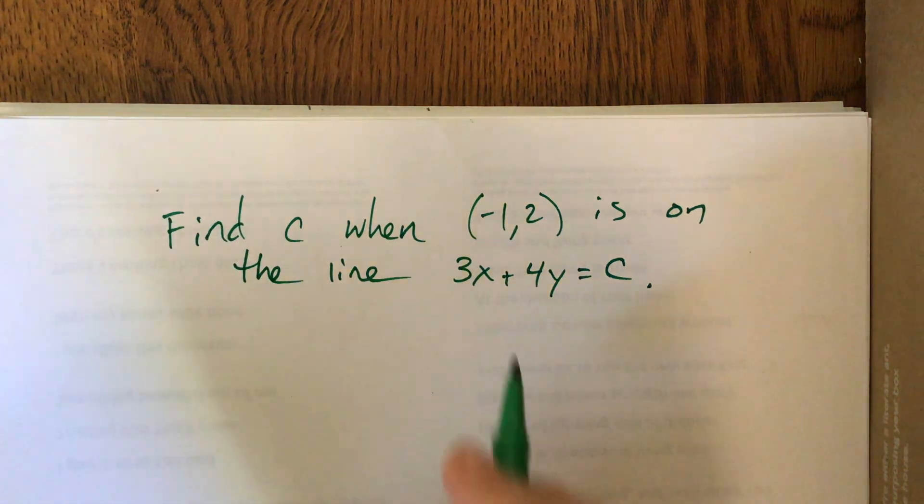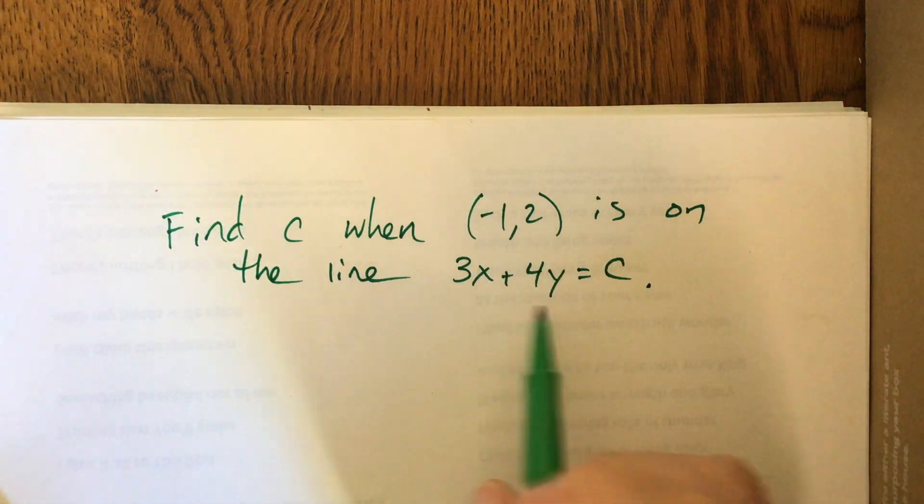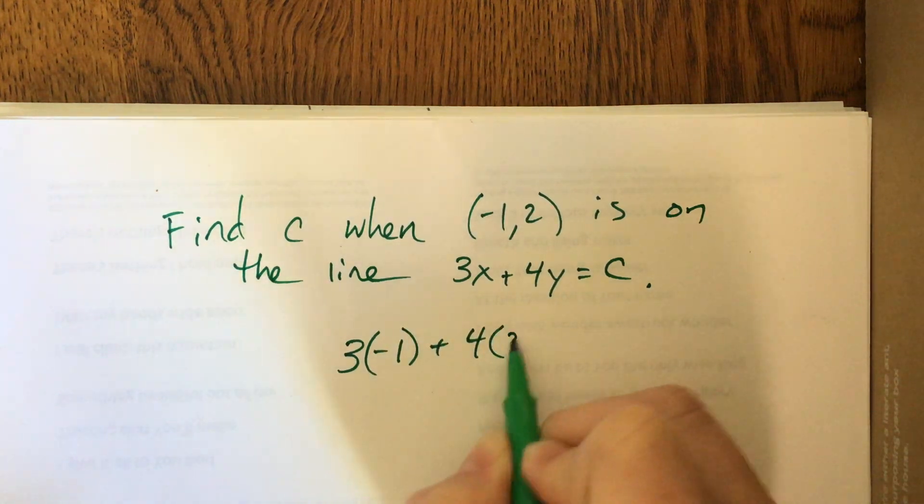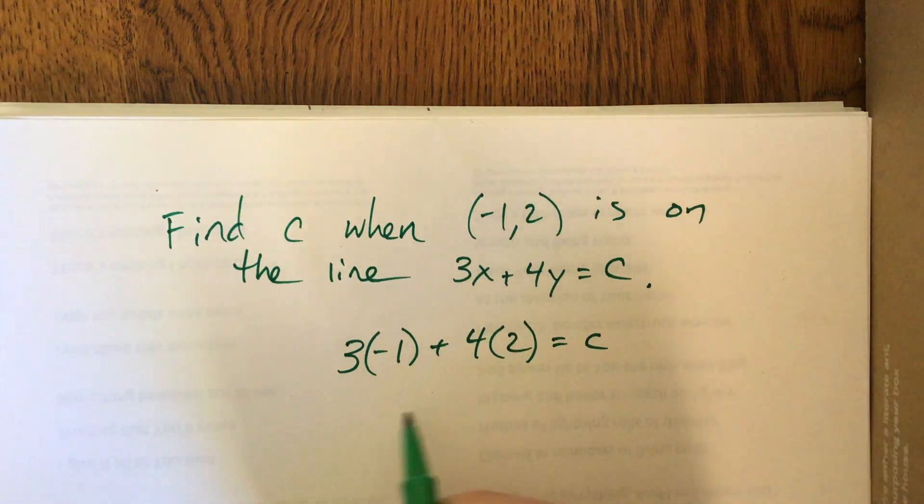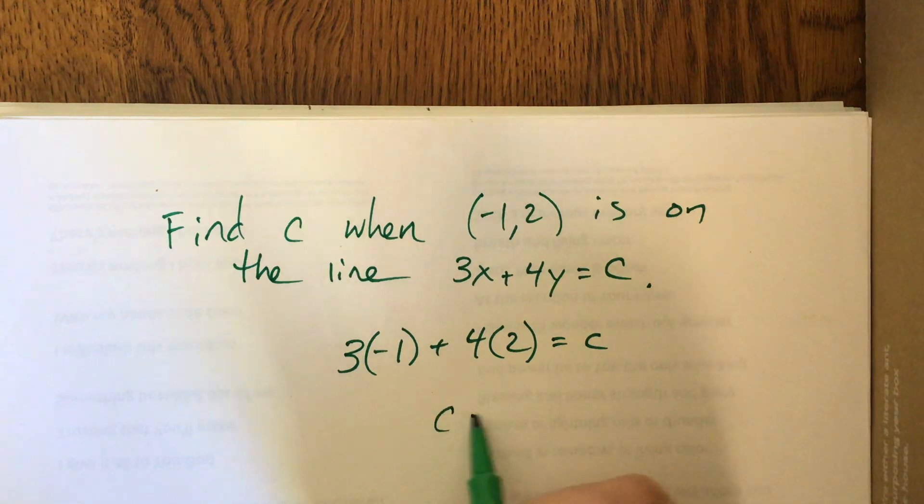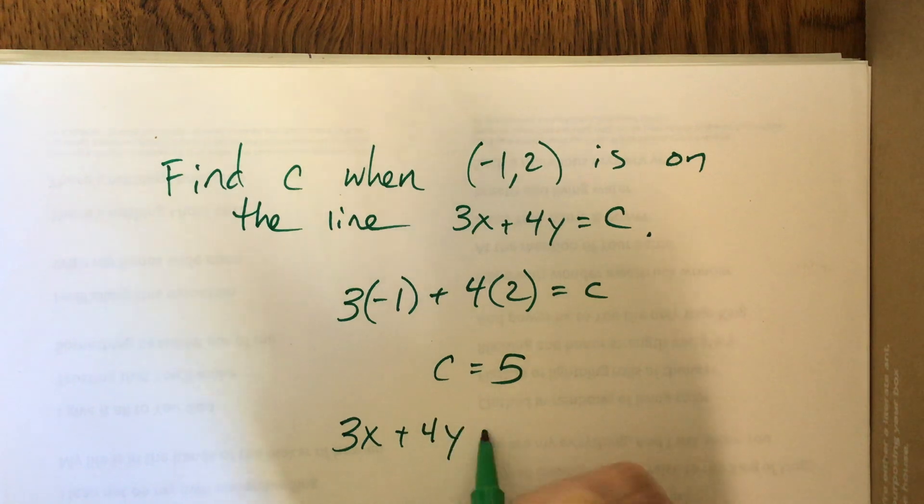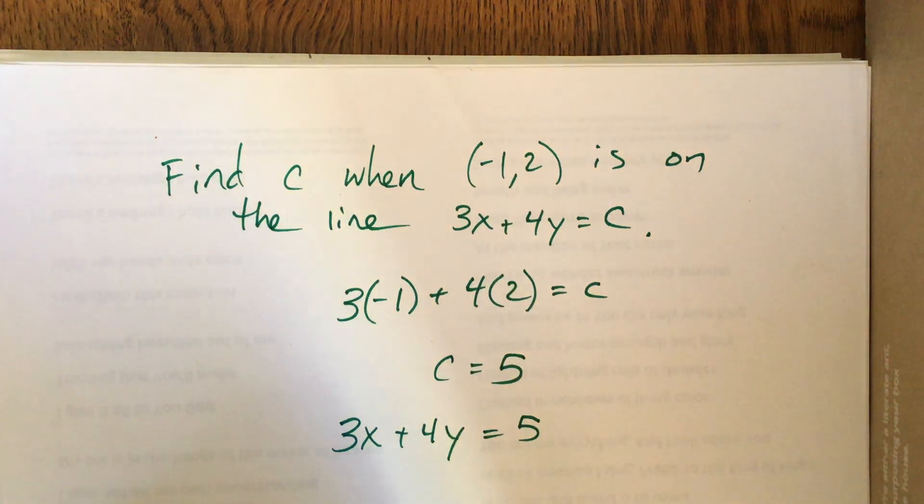Okay, so I could just plug this in, and then we have this 3 times negative 1 plus 4 times 2 is equal to c. Therefore, c is 5. So the equation of that line would be 3x plus 4y equals 5. The line 3x plus 4y equals 5 would pass through that point.